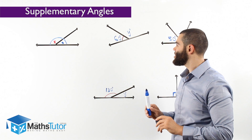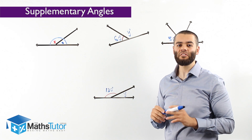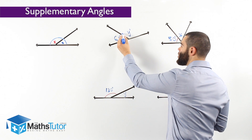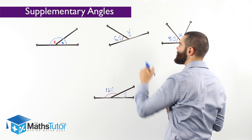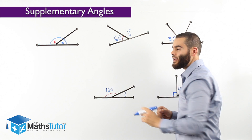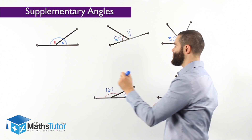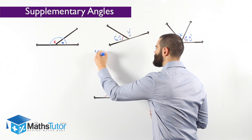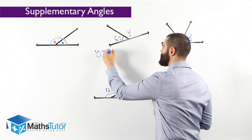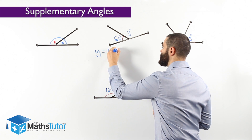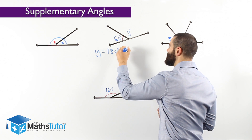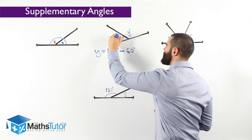Let's work out how to find a missing angle using supplementary angles. We want to work out y, which is missing. We know that this angle is 60 degrees, and we know that both together add to 180 degrees. So we write: y equals 180 degrees — the total of both angles — take away the 60 degrees, take away this angle here.